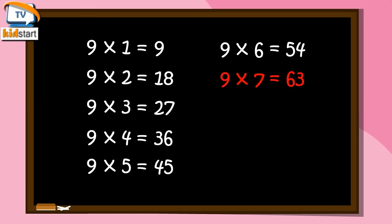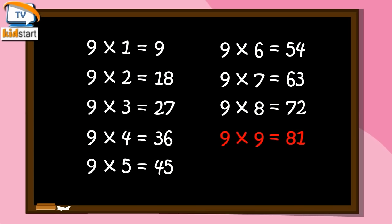Nine sevens are sixty-three. Nine eights are seventy-two. Nine nines are eighty-one. Nine tens are ninety.